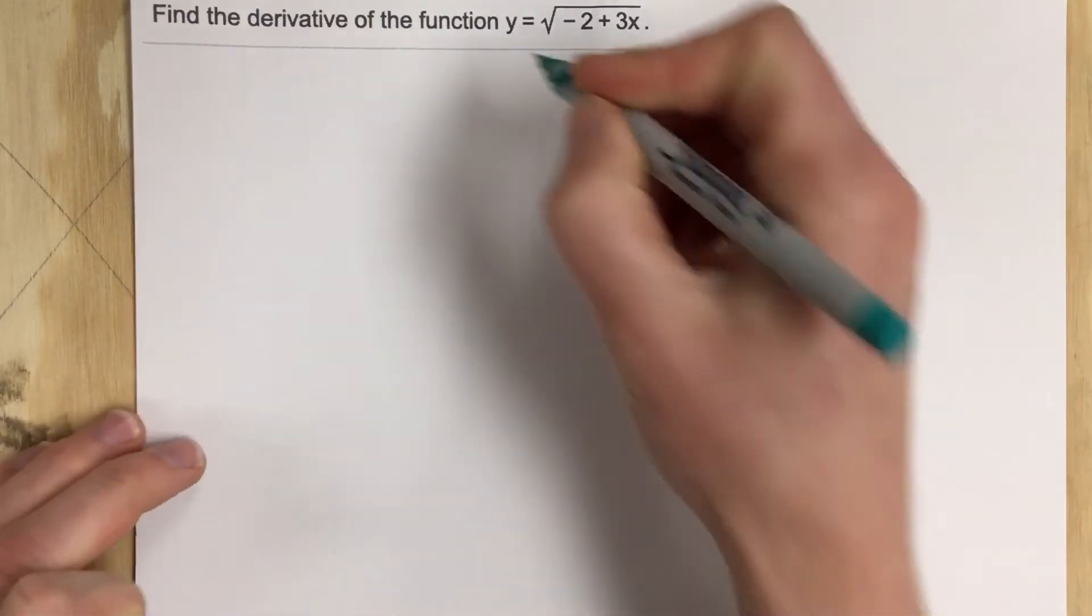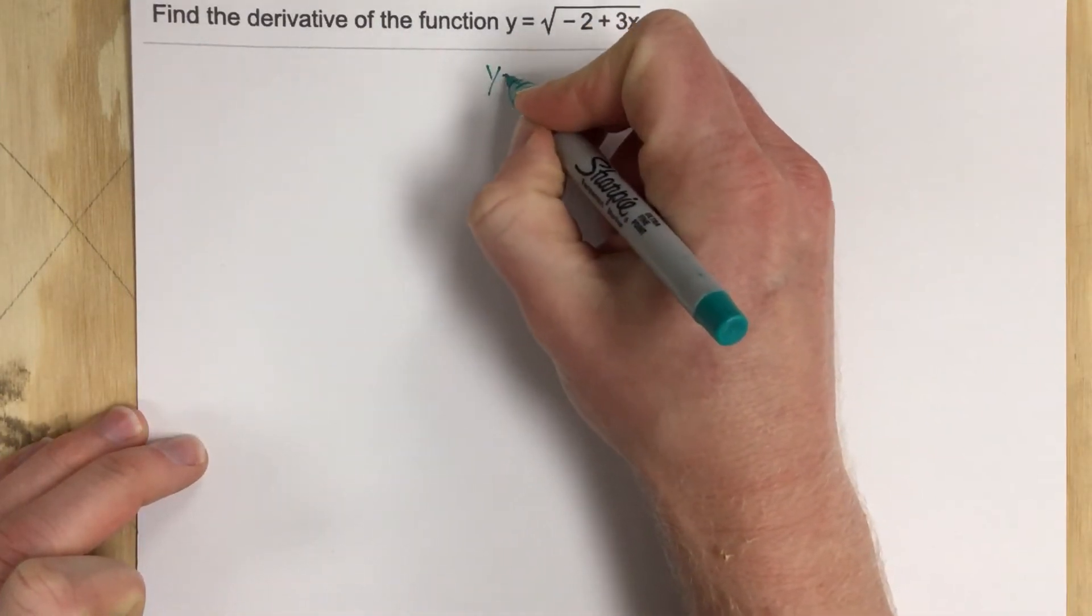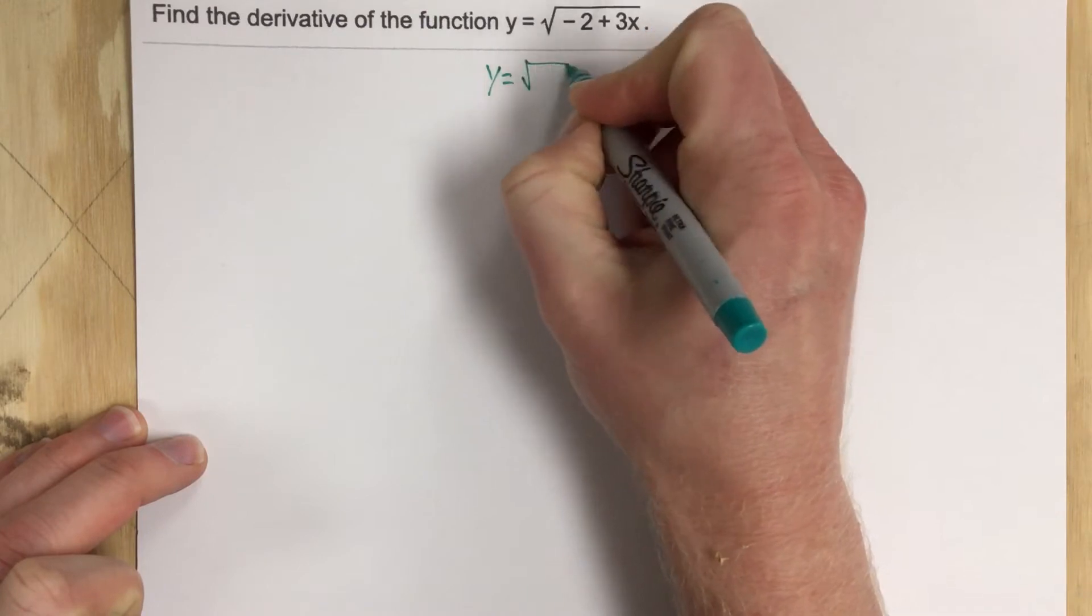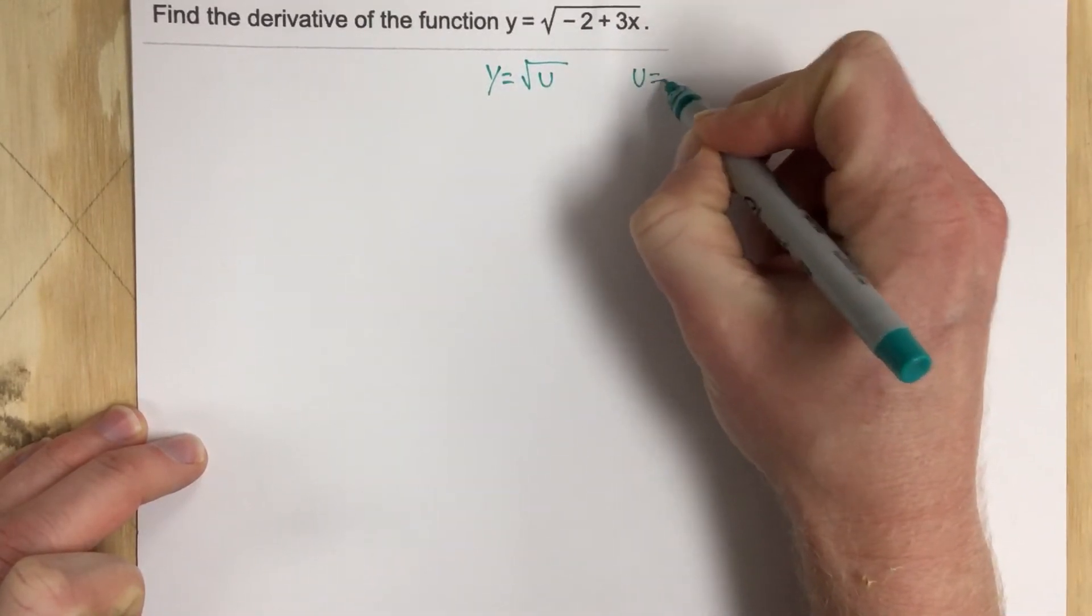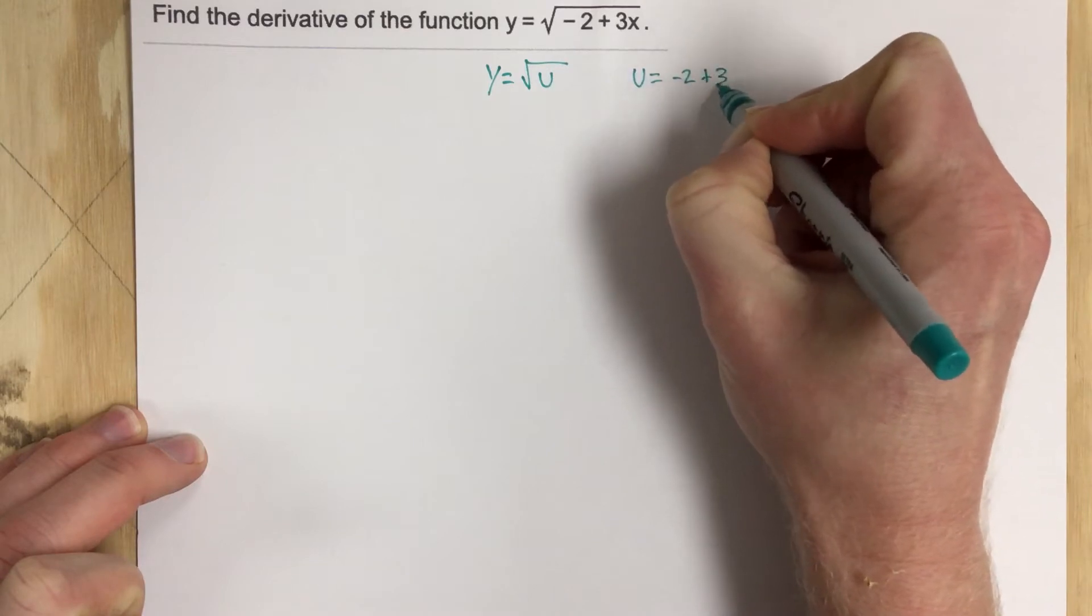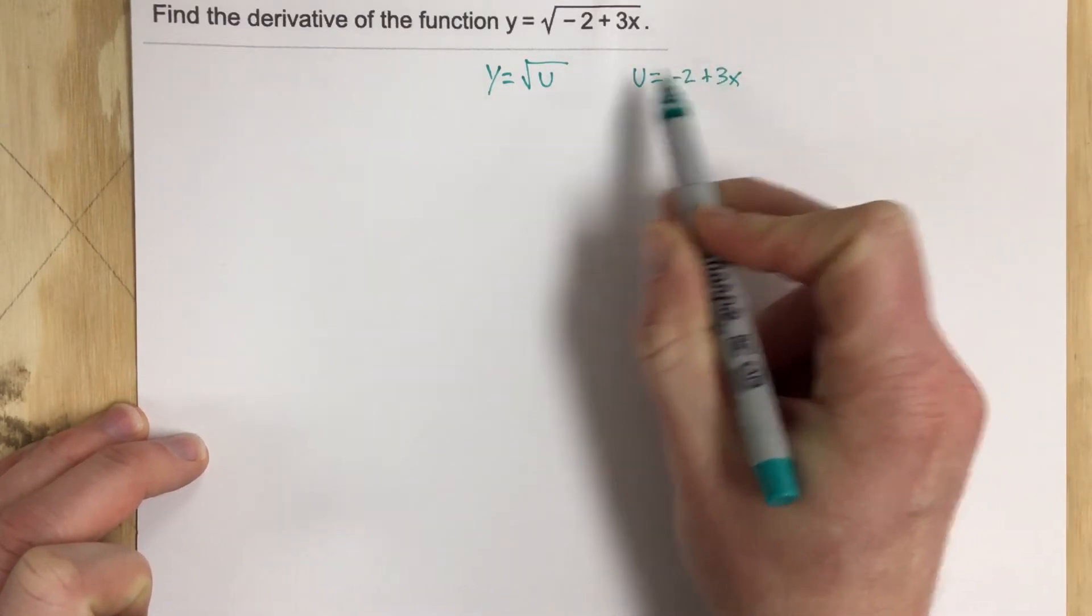So I'm going to write those out. We have y equals root u, and then u is equal to negative 2 plus 3x. So you can see the two different functions. This is being plugged into this.